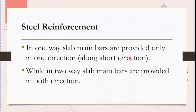One-way slabs and two-way slabs also differ in steel reinforcement. In a one-way slab, main bars are only provided in one direction — the direction in which bending or deflection occurs, that is the short direction. In the direction perpendicular to it, only shrinkage or temperature reinforcement is provided. In a two-way slab, main bars are provided in both directions.